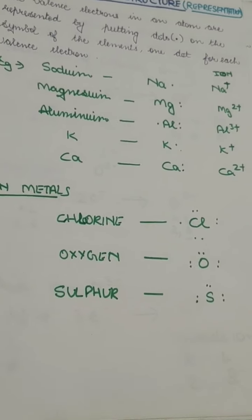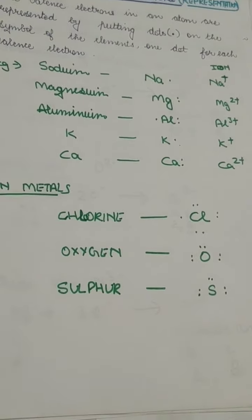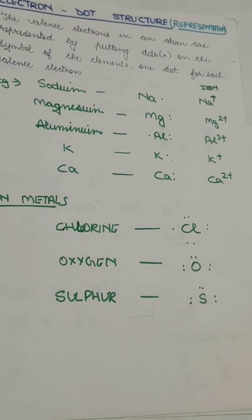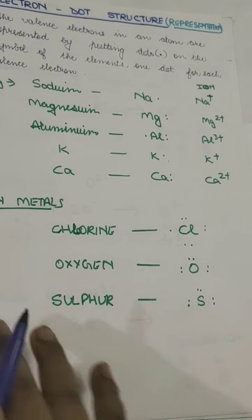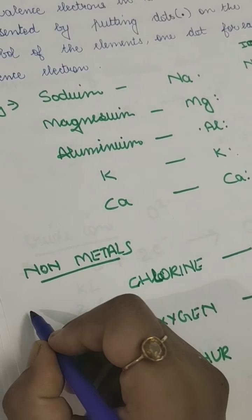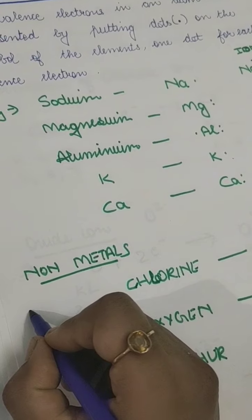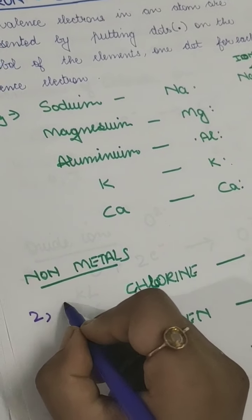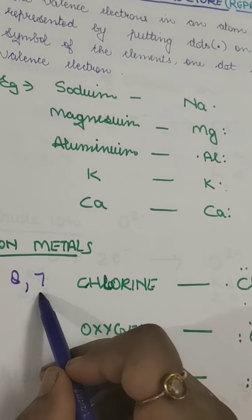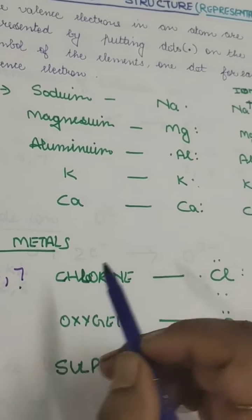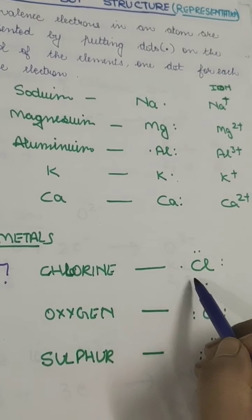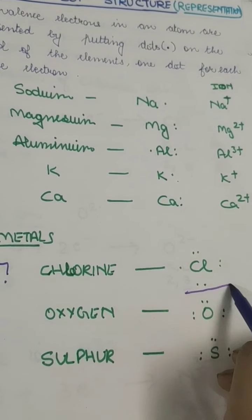In the case of non-metals, it is very easy. Chlorine has atomic number 17, so its electronic configuration is 2, 8 and 7. There are 7 electrons in its outermost shell, so we make 7 dots: 1, 2, 3, 4, 5, 6, 7. This is the electron dot structure of chlorine.